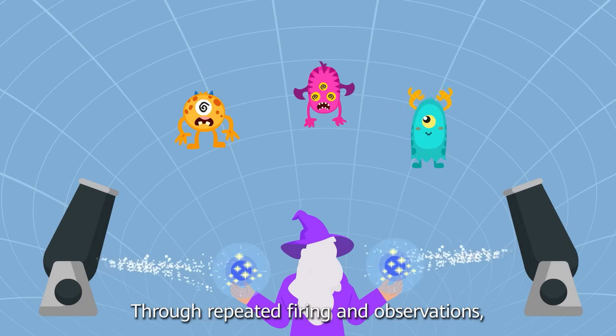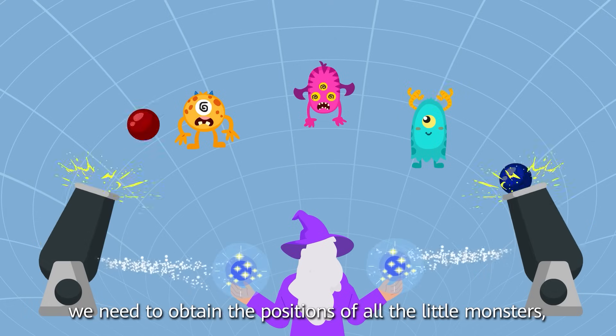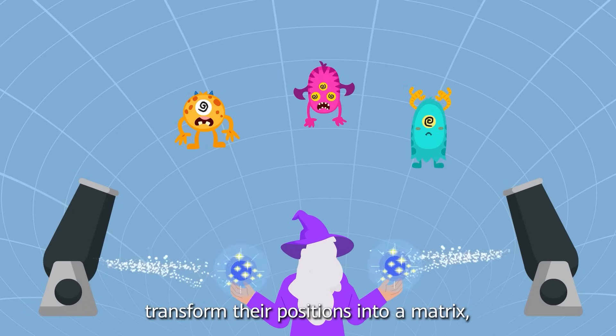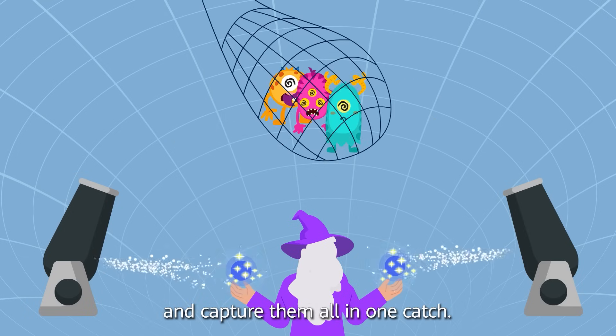Through repeated firing and observations, we need to obtain the positions of all the little monsters, transform their positions into a matrix, and capture them all in one catch.